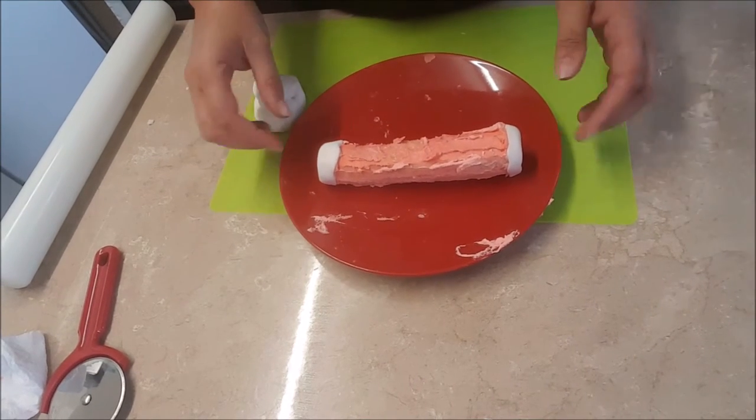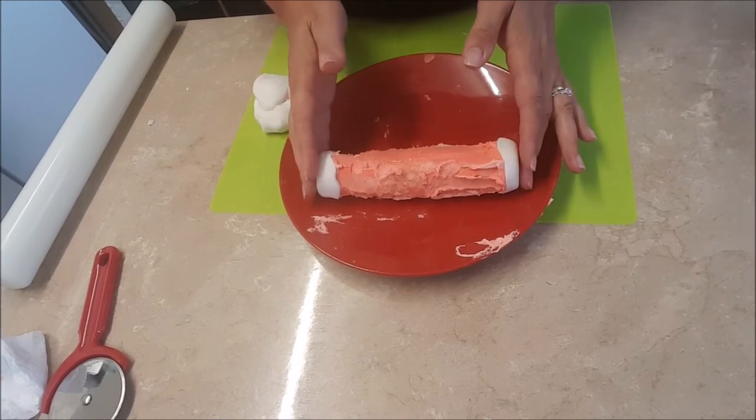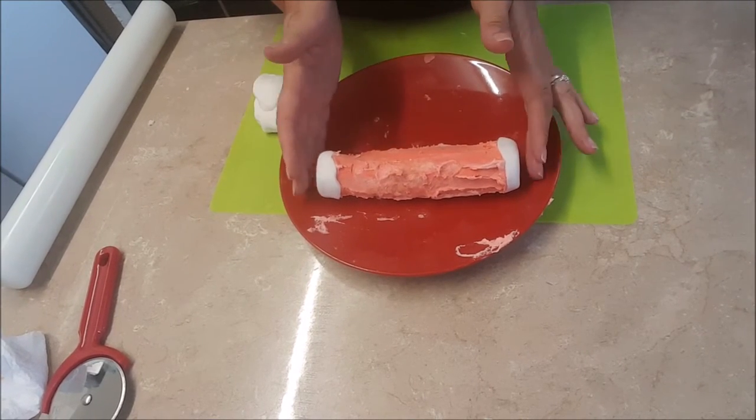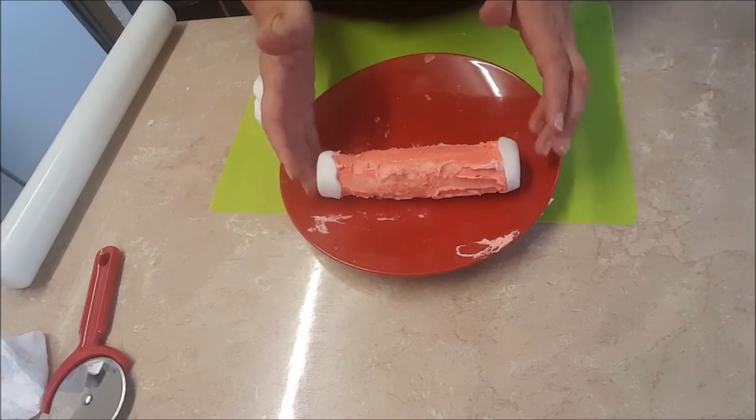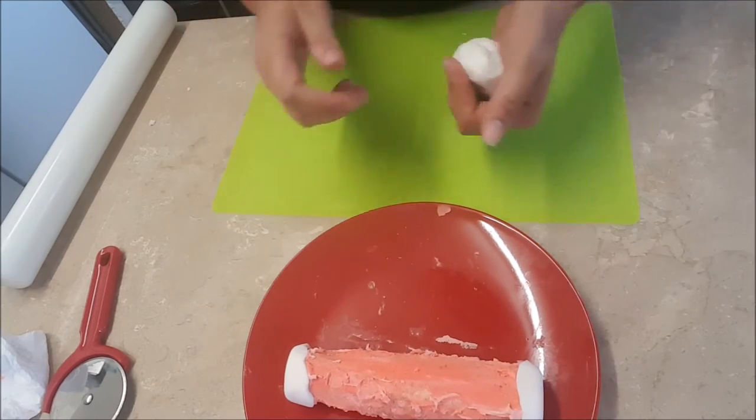This is the next part of my scroll. I've got my Rice Krispie Treats covered in buttercream and I've put some proper fondant on the ends. Now I'm just going to cover this section in fondant.